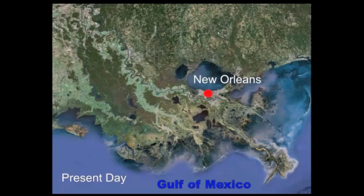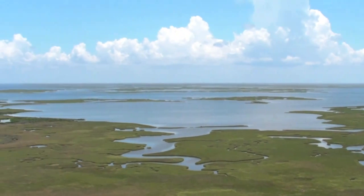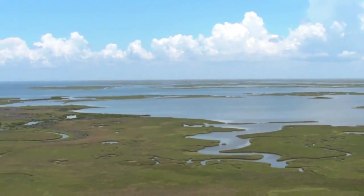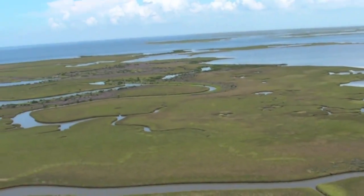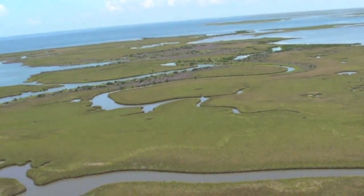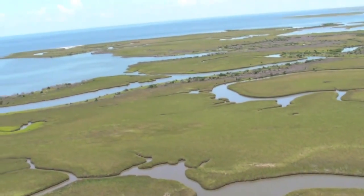The Louisiana coast is a dynamic system, built in part by the action of the Mississippi River. To understand how subsidence affects the Mississippi River Delta and its wetlands, we first have to go back a few thousand years.